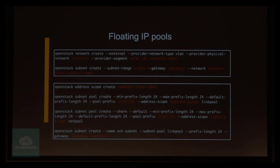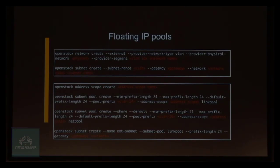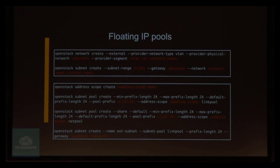With address scopes, you create an address scope, then a link network in that scope, a subnet pool for link networks, and a subnet pool for actual networks customers can provision. You create the external network in this address scope, so the network node's external interface is on the link network and the internal interface on the tenant network is in the same address scope — meaning no NAT is performed between them. This also ensures routable addresses used by customers don't overlap, because addresses are assigned from the subnet pool. In this example, a /16 subnet pool is used for tenant networks, and /24s are assigned from it.